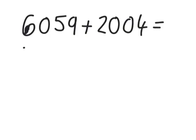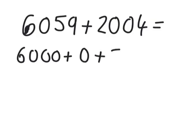So this time we'll partition it out: 6,000, and this time zero hundreds—it's very important to put the zero in—then 50, and then 9.